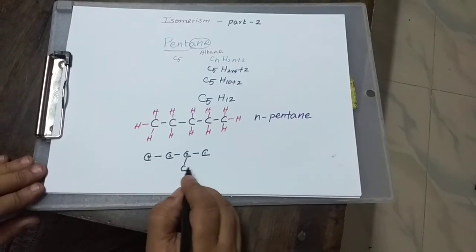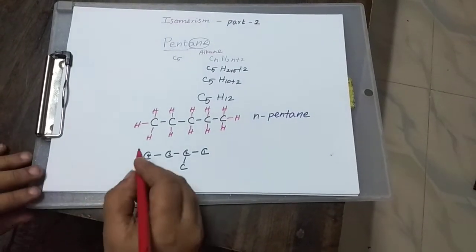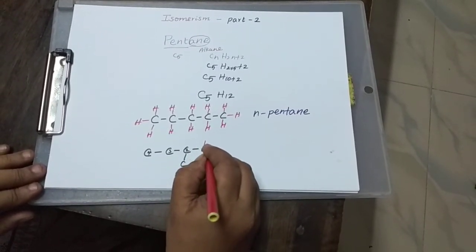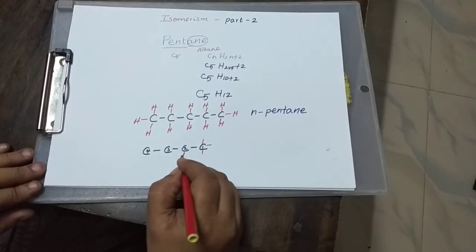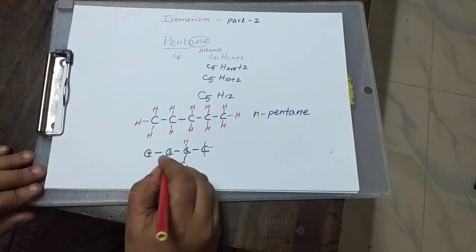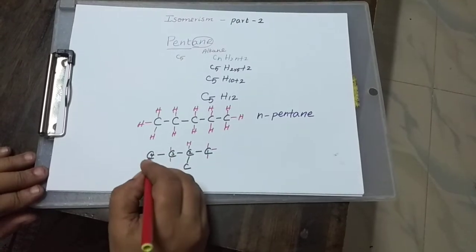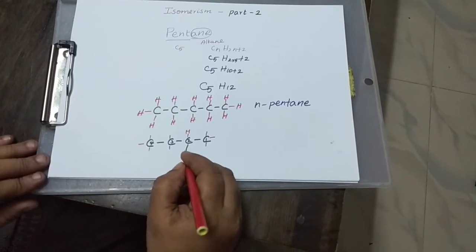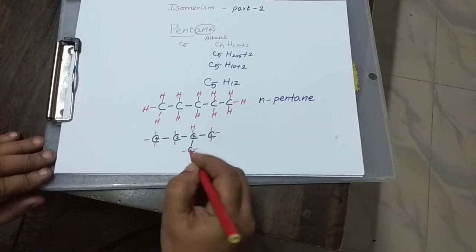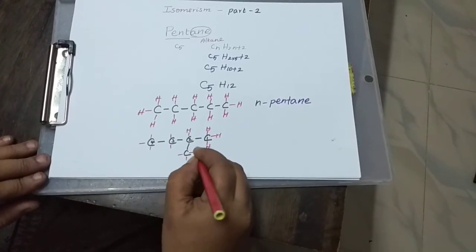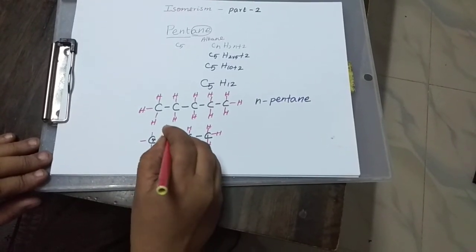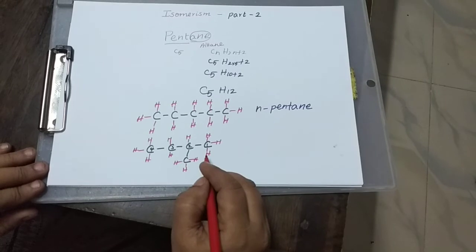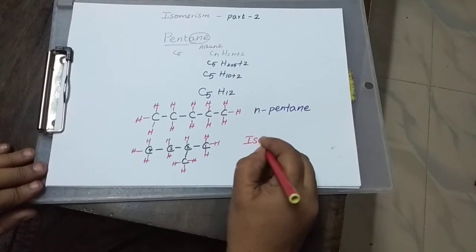Now let us complete the valency of each carbon — every carbon should have 4 bonds. Carbon 1 has 1 bond used, so it gets 3 hydrogens. Carbon 2 has 3 bonds used, so it gets 1 hydrogen. Carbon 3 has 2 bonds used, so it gets 2 hydrogens. Carbon 4 has 1 bond used, so it gets 3 hydrogens. The branch carbon has 1 bond used, so it gets 3 hydrogens. The total number of hydrogens is 12, and carbon is 5, so the formula is C5H12. This second isomer is called isopentane.